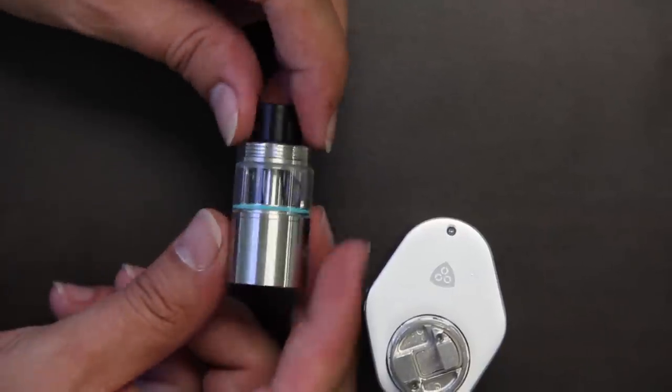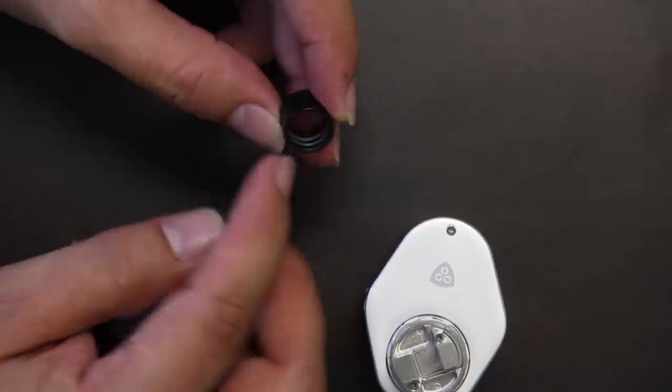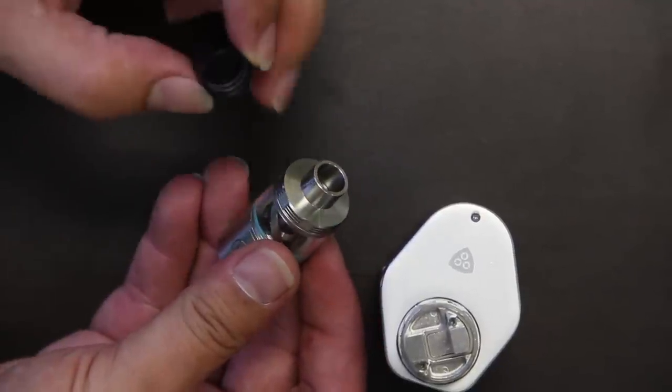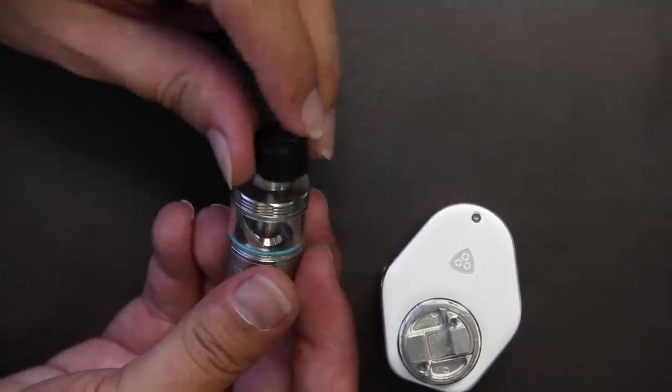And the drip tip here actually comes off. It is a normal 510 drip tip. You can actually fit a 510 drip tip in the top cap there as well, if you prefer.